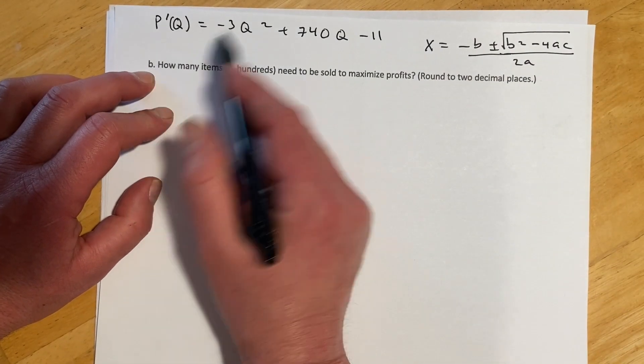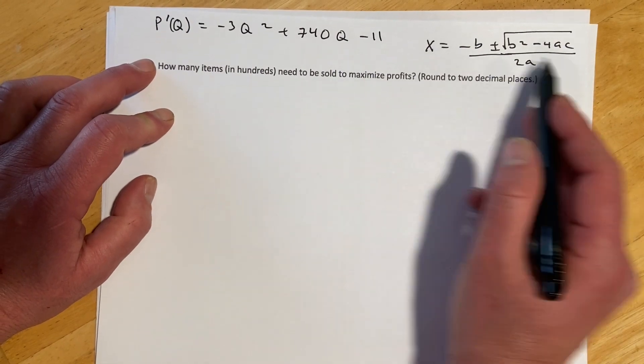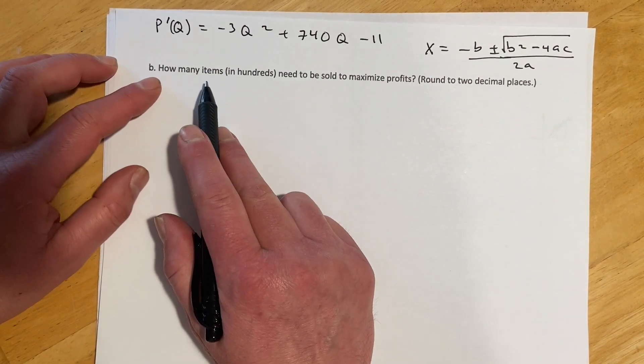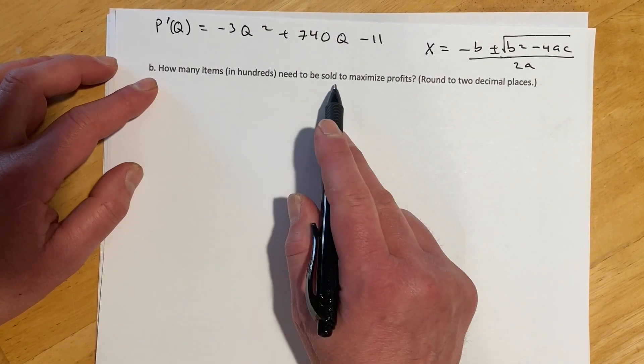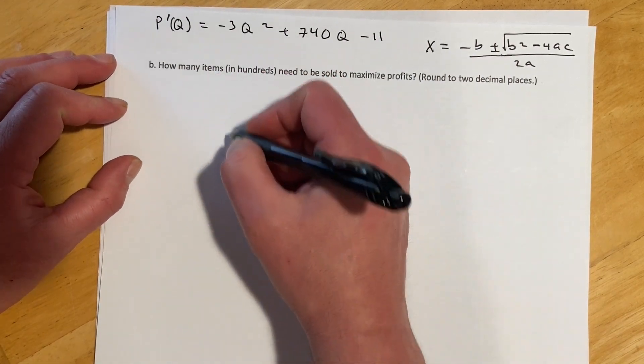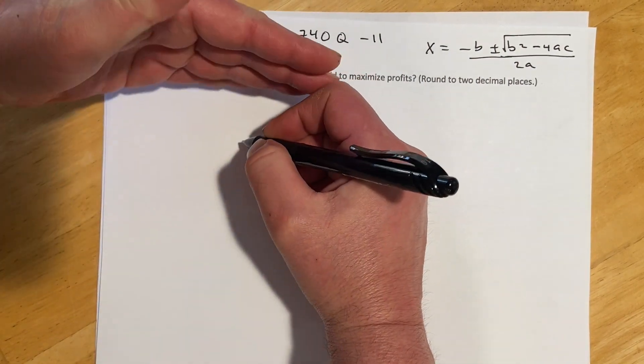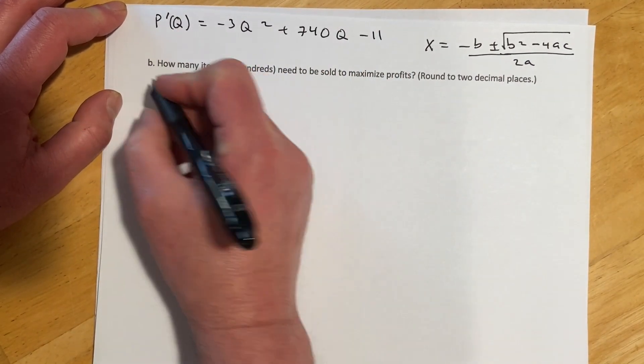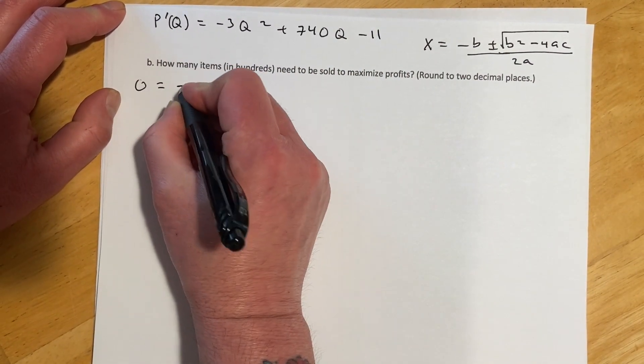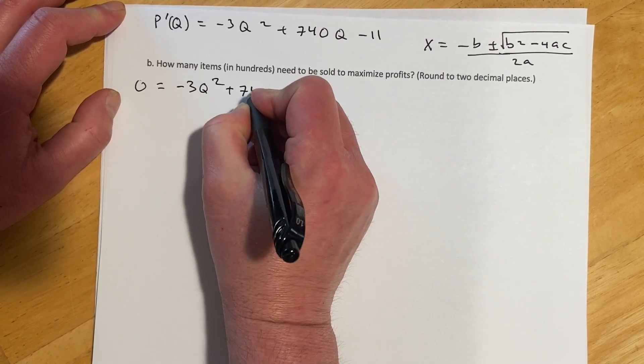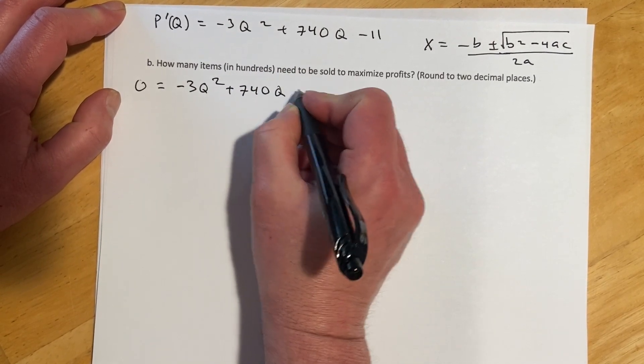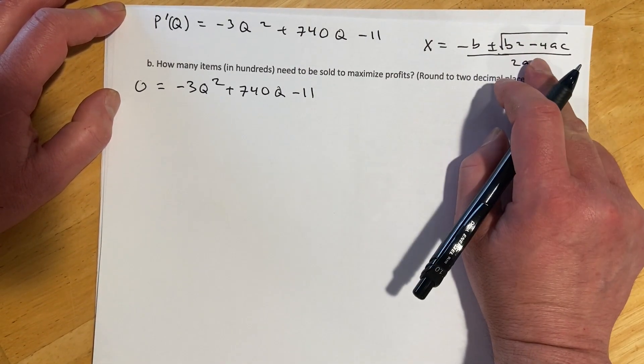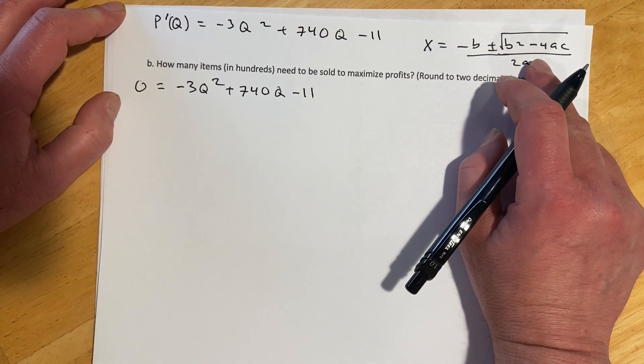Okay, so then for part B, I just wrote down the derivative from the last page. And then here's our quadratic formula, which we're going to need to solve this. So in this case, we're going to do, we're trying to figure out how many items we need to sell to maximize profits. So remember, if we're looking for a maximum, that's going to be where the derivative is zero. So what we're going to do is set P prime of Q to zero, and then solve. Unfortunately, this does not factor. And so that's where we're going to use the quadratic formula to get our two solutions.